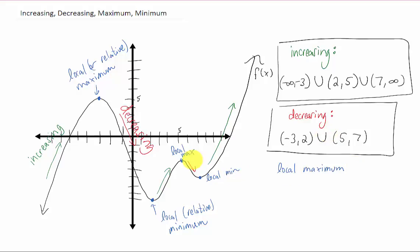Now let's talk about the max and min values. Usually what we want to give is two pieces of information: the x value and the y value. For this first maximum here, we would say that the maximum value is five, that's the y value, and that occurs at x equals negative three. We have a local maximum of five at x equals negative three.